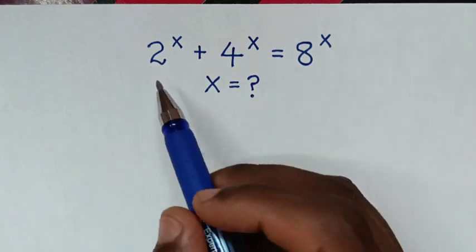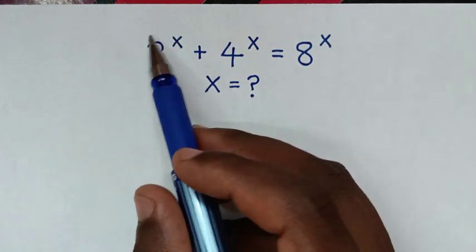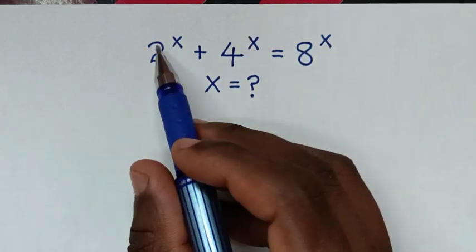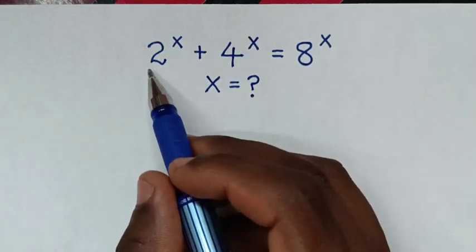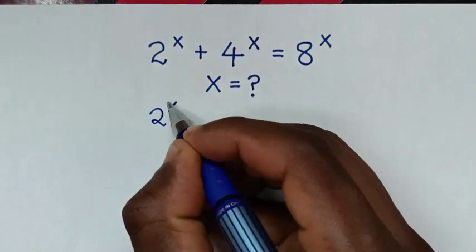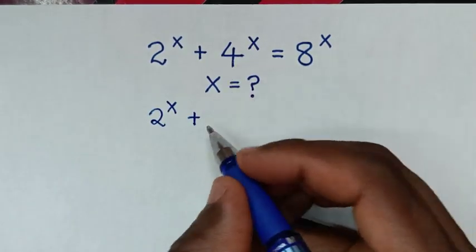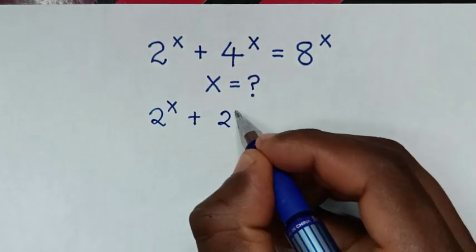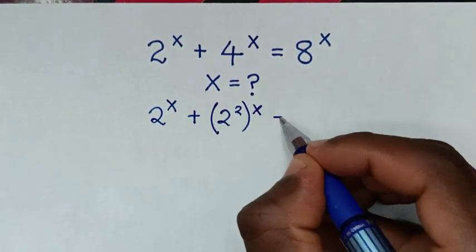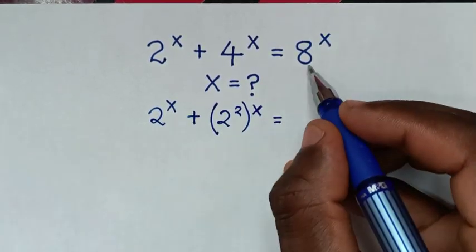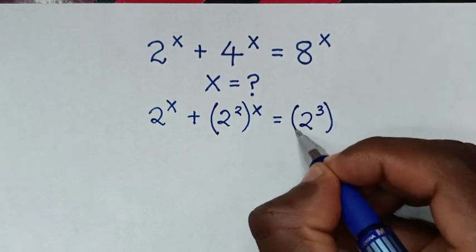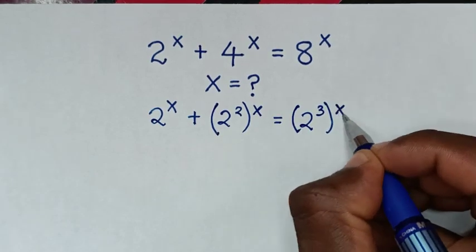First, we will make both exponents have the same base of 2. So it will be 2 power x plus — 4 is the same as 2 power 2, bracket power of x — is equal to 8, which is 2 power 3, bracket power of x.